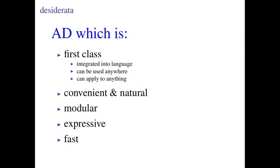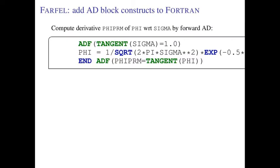We want AD to be first-class. Here's how you compute a derivative in Farful Fortran: this is a block construct for doing forward AD on a hunk of code. What you do is put in tangent vectors at the beginning.